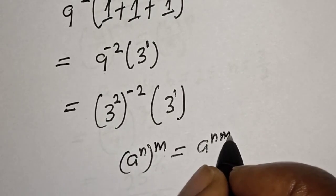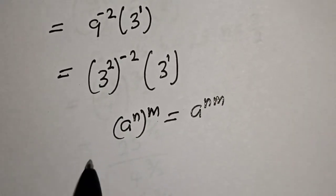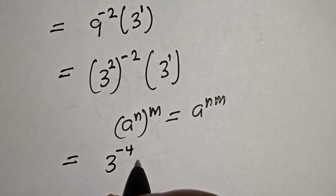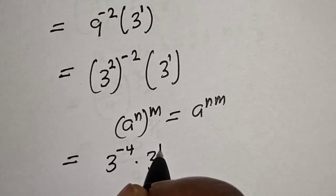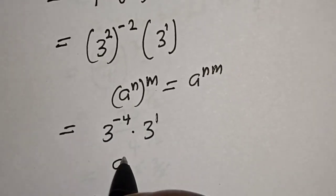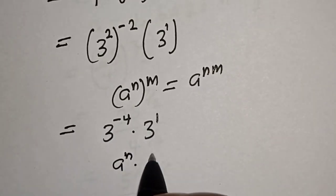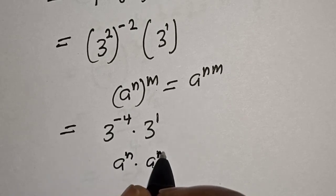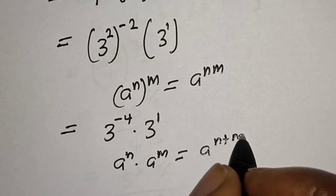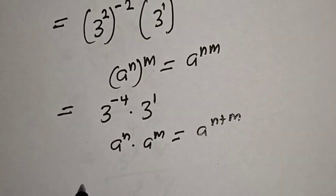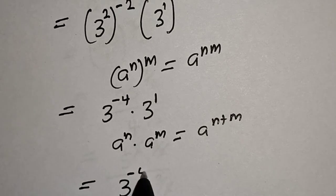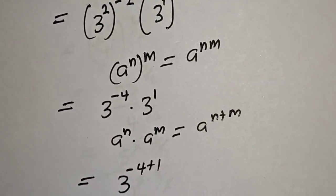So 9 raised to power minus 2 becomes 3 raised to power minus 4, multiplied by 3 raised to power 1. Then, using the rule: a raised to power n, multiplied by a raised to power m, equals a raised to power n plus m. This gives us 3 raised to power minus 4 plus 1.